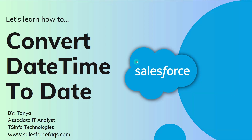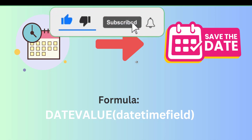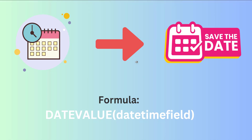Let's proceed by understanding the concept. In Salesforce, DateTime and Date are two different data types and we cannot use them interchangeably. To perform a comparison between a Date and a DateTime value, we always need to convert them to the same data type. For this, we use the DATE_VALUE function in Salesforce, and the syntax of this function is shown on your screen.